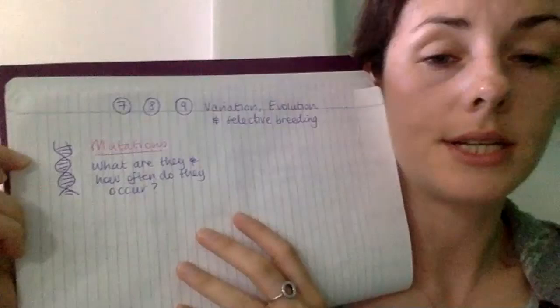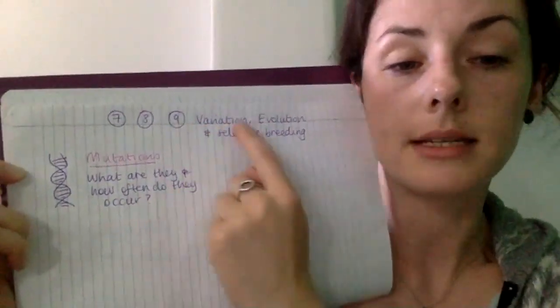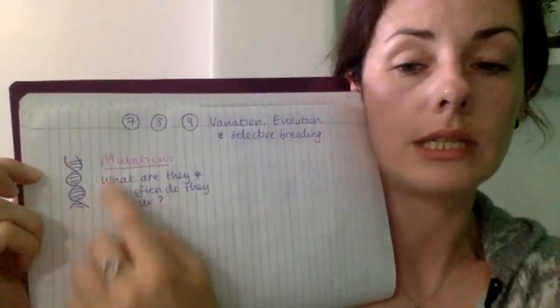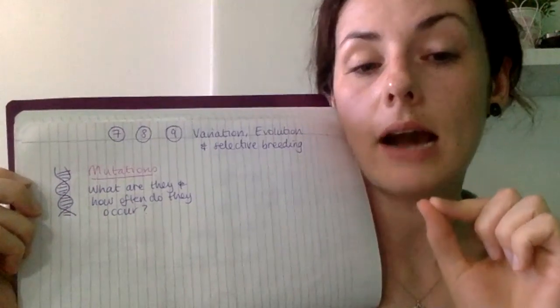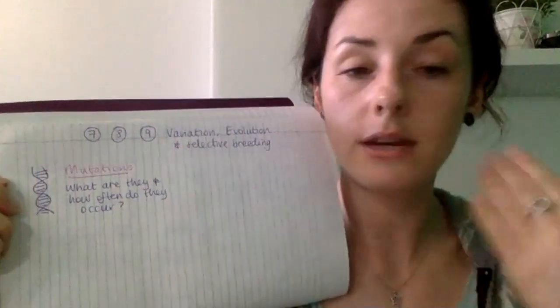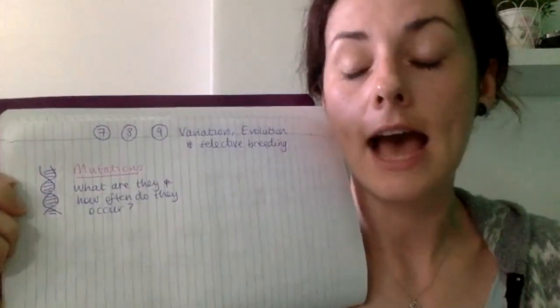Mutations are what actually cause variation to occur in a population — they're just changes to DNA occurring all the time, but it's very rare that they actually change the phenotype of an organism. Phenotype is just physically what they look like.